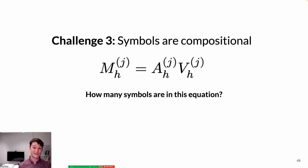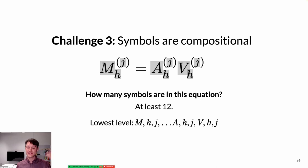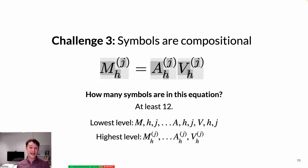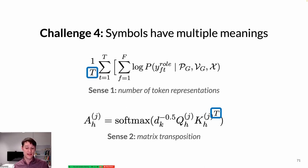A third challenge is that symbols are compositional, so selecting which symbols you want to see definitions for is not straightforward. One question is: how many symbols are even in this equation? I would argue there are at least 12 — at your lowest level, for instance on the left-hand side, your m, your h, and the j; at the next highest level, you have m sub h to the j. You have at least 12 symbols here, and some of them encapsulate other symbols. Another challenge is that symbols have multiple meanings. To choose two appearances of the same symbol T from the same example paper: in one case T is used to mean the number of token representations, and in a later passage it's used as the matrix transposition operator. So affordances for looking up definitions should be cognizant of the fact that symbols might have multiple definitions at different places.